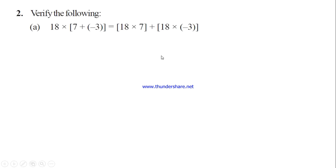Now question 2. Last class we learnt about the multiplication of integers. Let's see further questions. Verify the following: 18 into [7 + (-3)] equals 18 into 7 plus 18 into (-3).